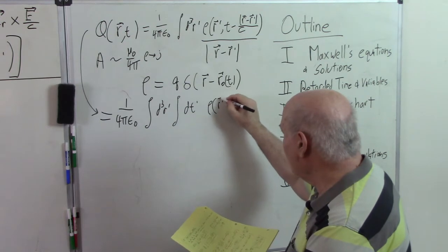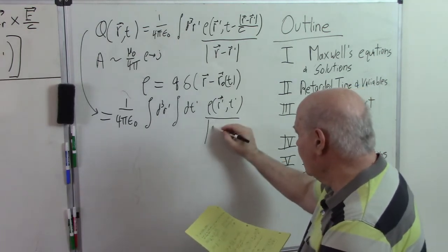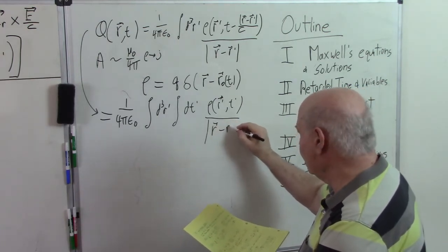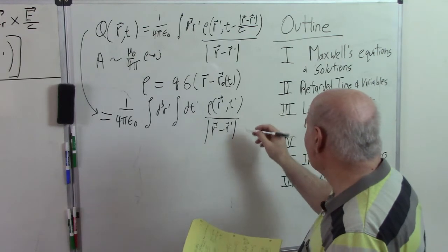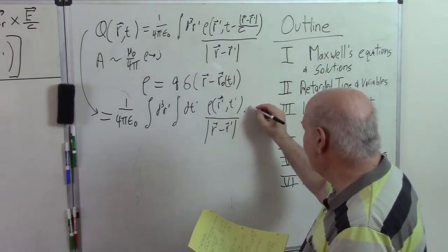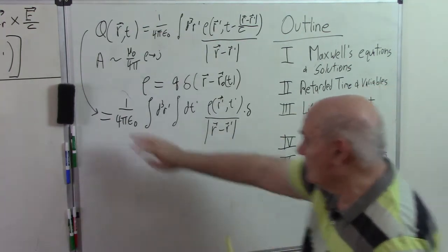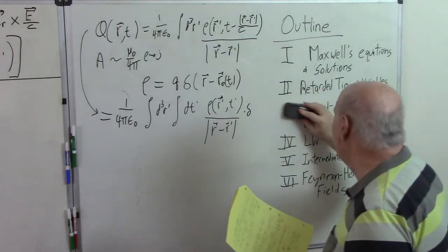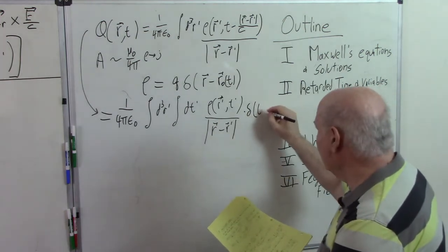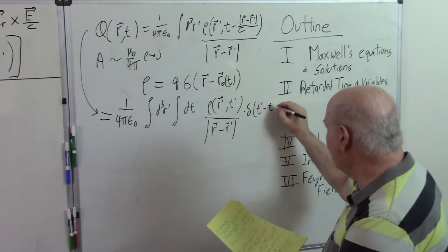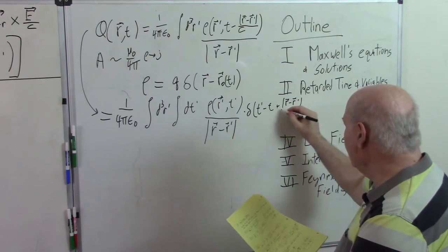Rho of r', t', |r - r'|. So we're going to write it down here. And I didn't leave myself enough room. But this is times a delta function. And here's where we're going to make some more room. Delta of t' minus t plus |r - r'|/c.